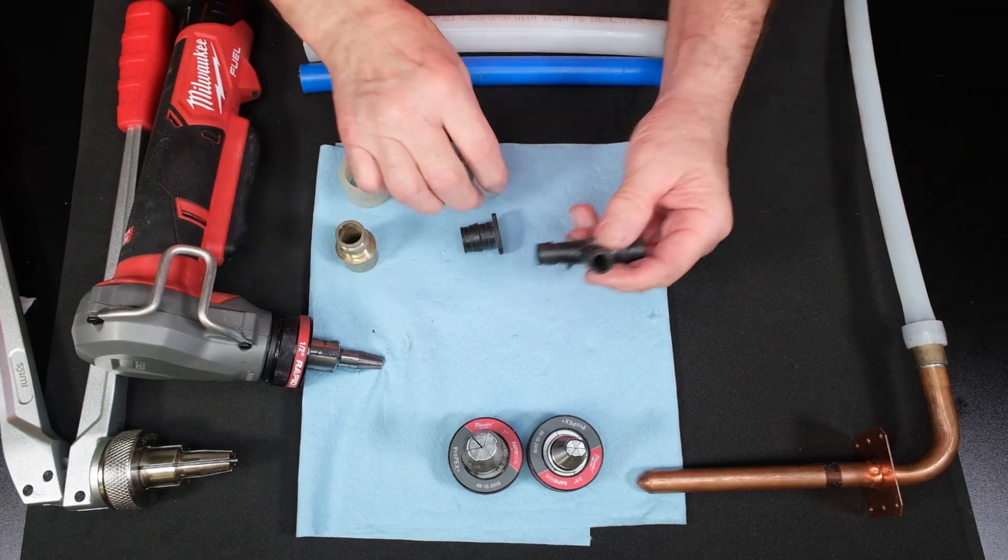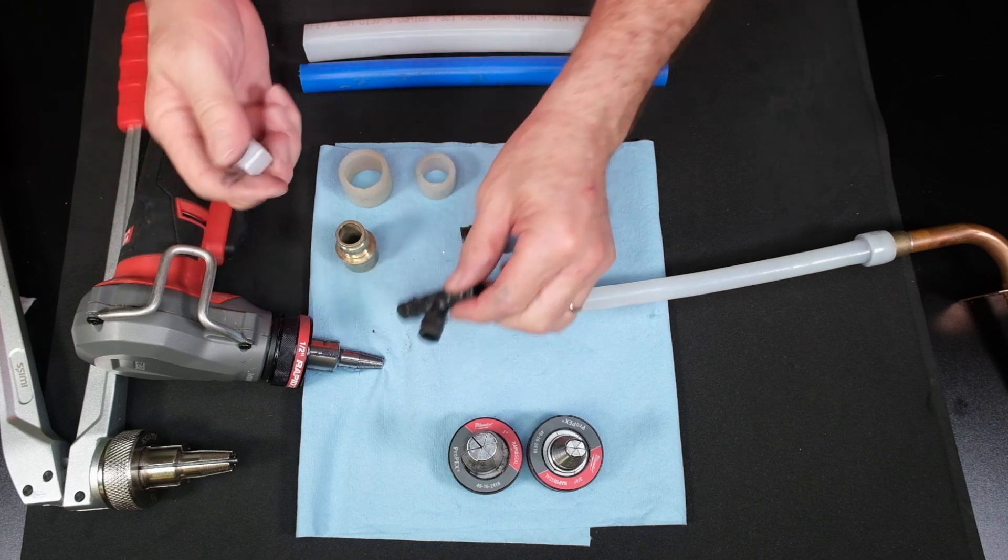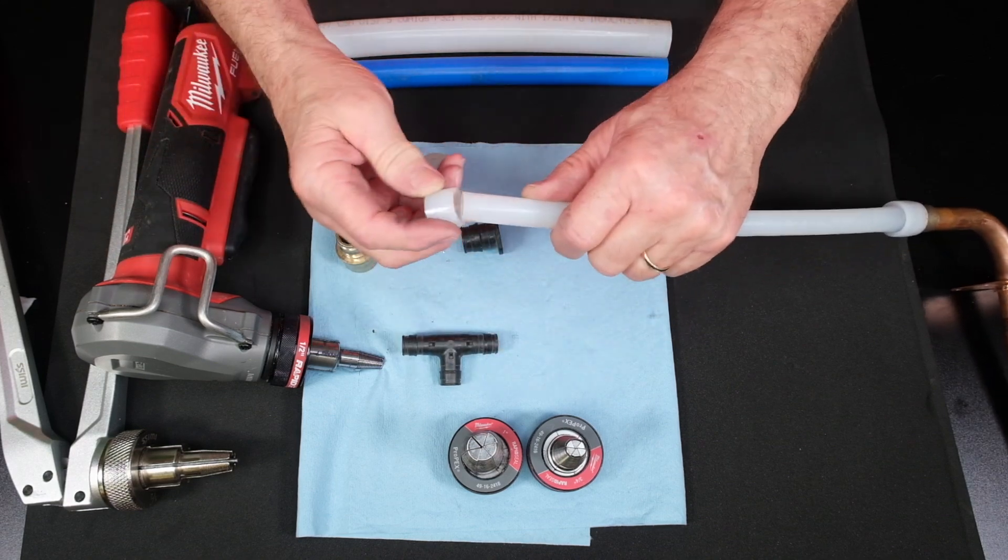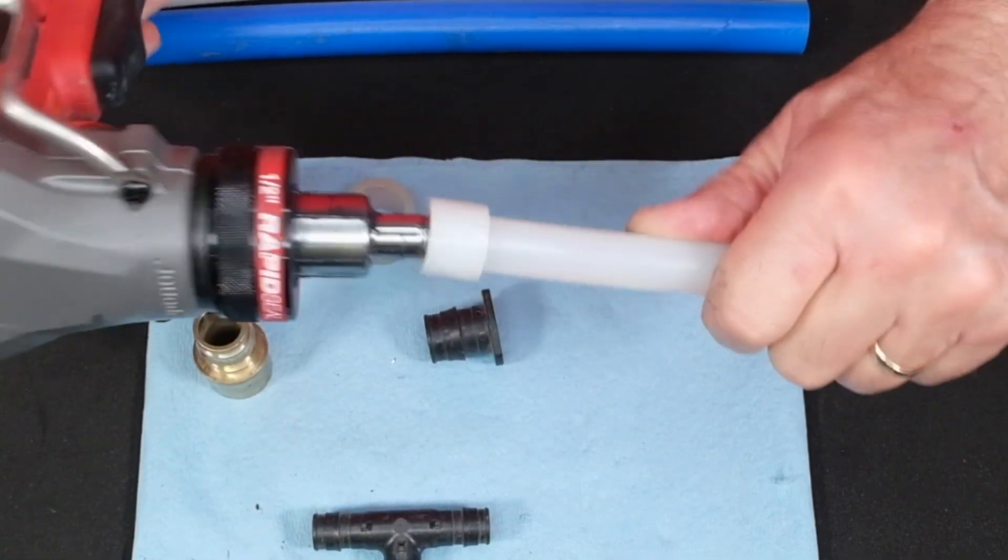One more time, we'll do it again with this one. This is a composite fitting. Again, this only slides on one direction. You put it on. You put your expanding tool in.